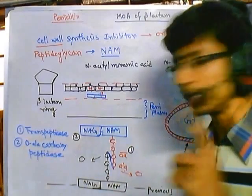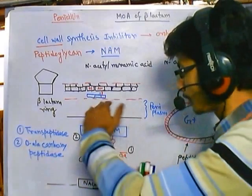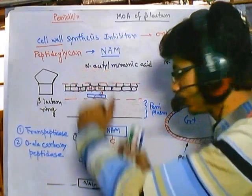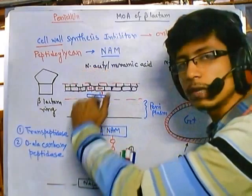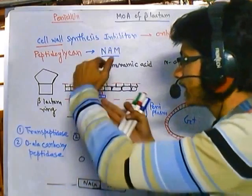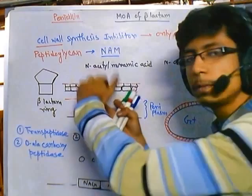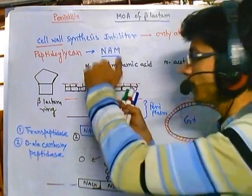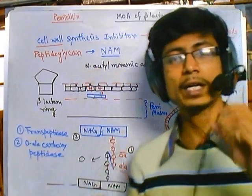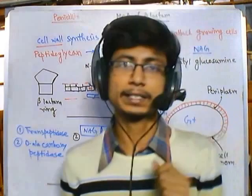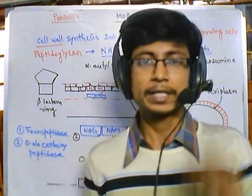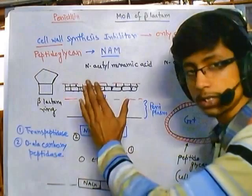After this cross-linking is done, the previous set of NAG-NAM is now linked with the new set of NAG-NAM, and what we get is a complete buildup of the wall — a complete buildup of peptidoglycan. That's the peptidoglycan synthesis pathway inside the cell. Now, beta-lactam antibiotics interfere with this process.